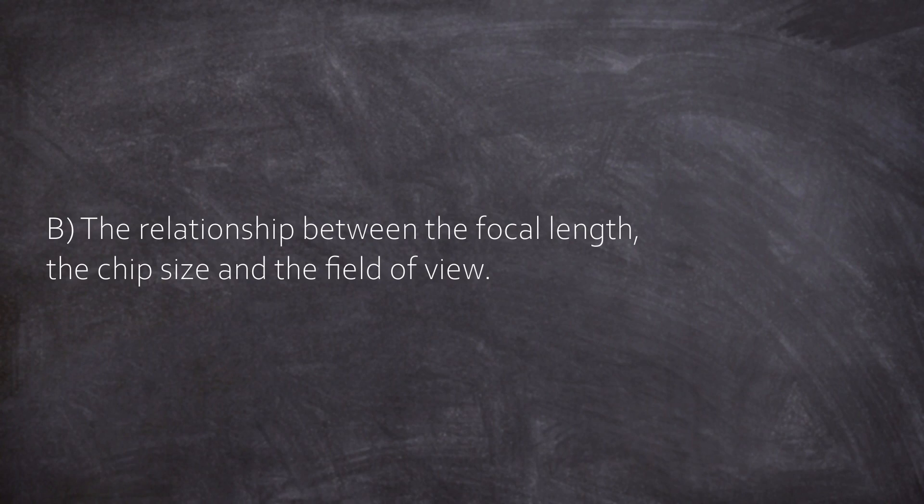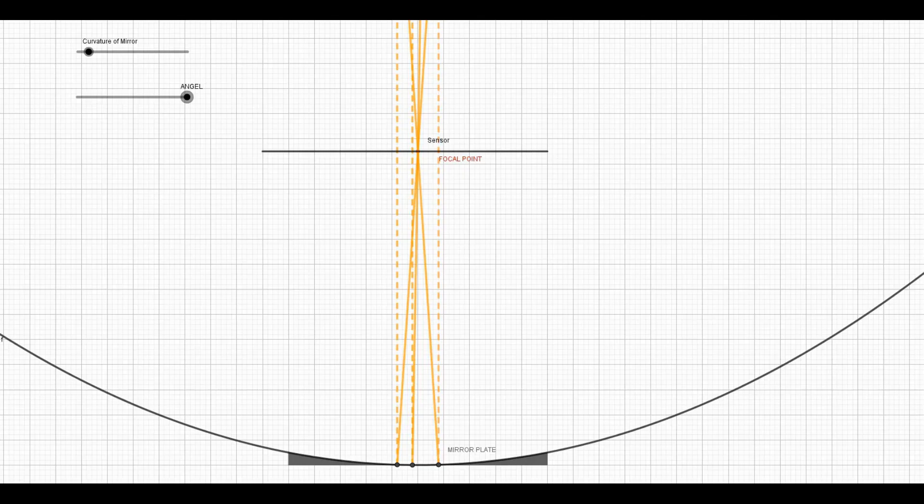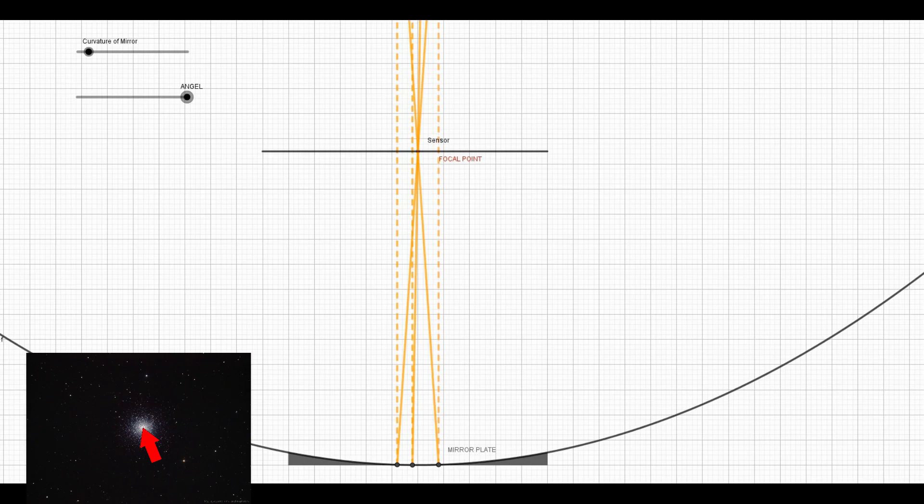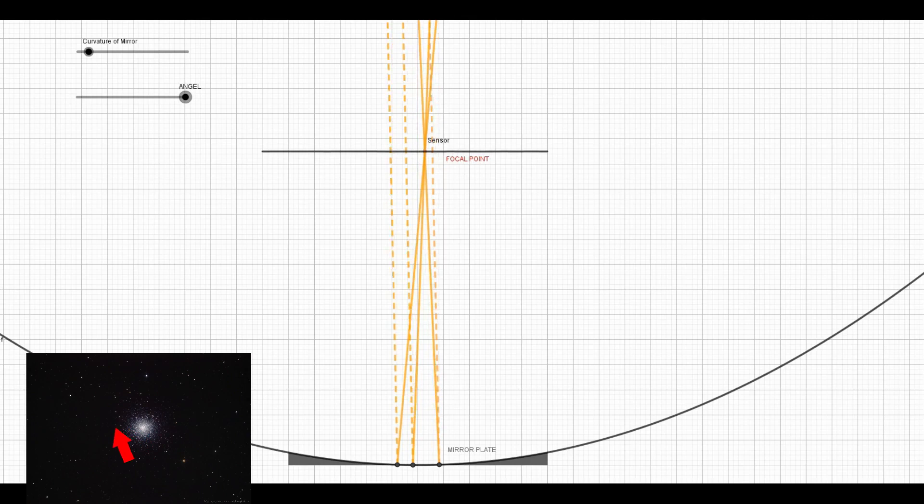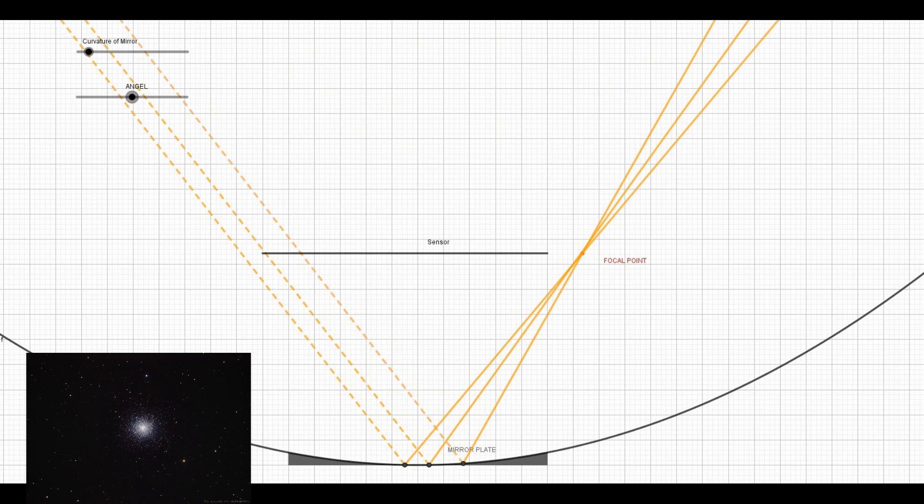With that in mind, we can go to the second point: the relation between focal length, chip size, and field of view. Here is a simulation of a reflector telescope and we place a sensor in the focal plane so we are always in focus. Then we can alter the angle of the incoming light. This is light from the central region and this is light from the corners. If we alter the angle, we see that the focal point shifts. But with a fixed chip size like this, we can only go like this far and then we reach the edge of the sensor and everything else is lost.